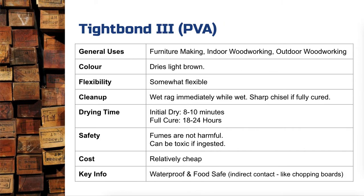The second glue is Titebond III. This is a type of PVA that has been chemically engineered to improve its qualities. Furniture making and indoor woodworking still apply, but outdoor woodworking is an added benefit of Titebond III because this adhesive is waterproof. You can still clean it with a wet rag while it is wet, but once it's fully cured — after that 24-hour window — the adhesive has a slightly different chemical structure, meaning water can no longer penetrate it. You can leave it outside in the rain or use it in a chopping board, and the adhesive will not deteriorate.